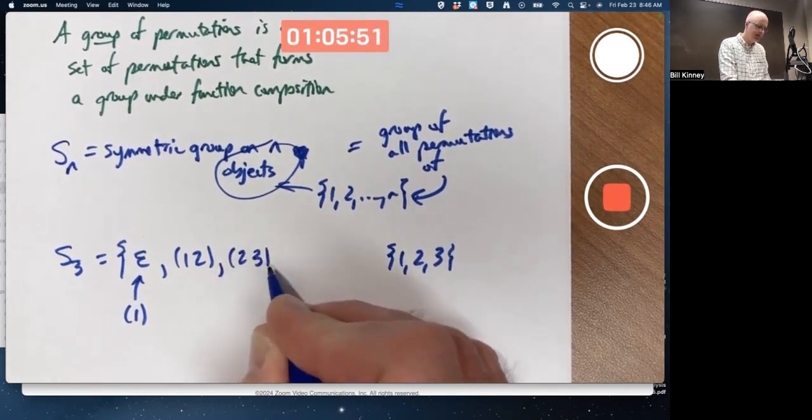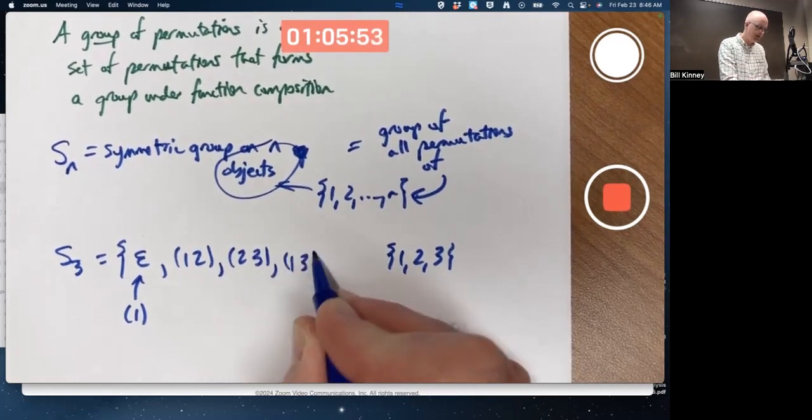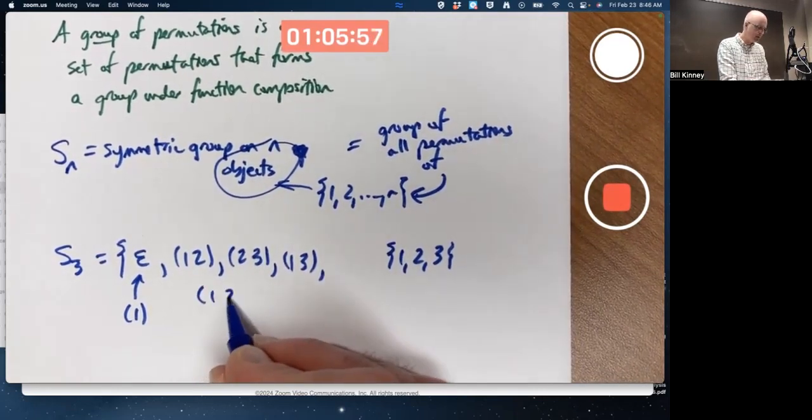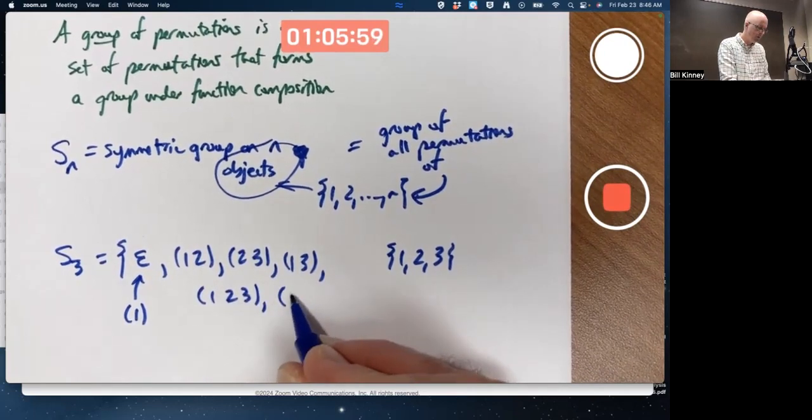We could also do (2 3), (1 3), and there's 2 more 3-cycles: (1 2 3) and (1 3 2).